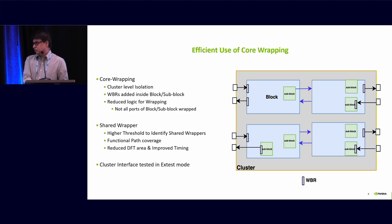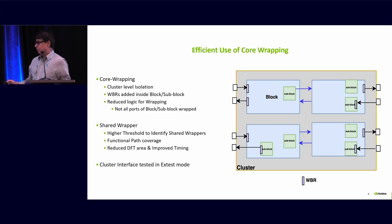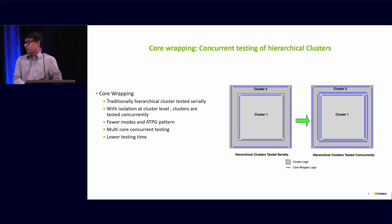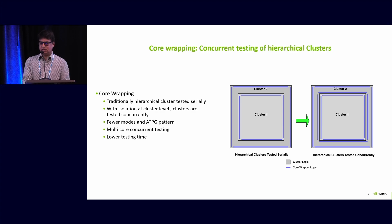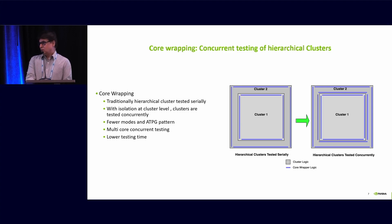Since we insert the wrapper for the cluster-level port, we perform cross-test between clusters. Core wrapping enables concurrent testing of the hierarchical core. As shown in the picture, where we have cluster 2 and on top of it cluster 1, both clusters can be tested concurrently. That requires fewer ATPG modes, fewer ATPG patterns, and less test time. Traditionally these clusters are tested serially — cluster 2 first and then cluster 1 — requiring more ATPG modes and more test time. So core wrapping at the cluster level enables concurrent testing of the hierarchical core.